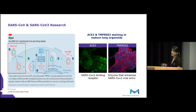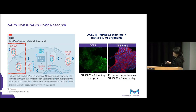I mentioned previously that these lung organoids might serve as a model for infectious disease. We asked whether the receptors and enzymes that enhance SARS-CoV-2 entry are expressed in our lung system. We took highly mature lung organoids and stained them for ACE2 — the SARS-CoV-2 binding receptor — and also for TMPRSS2, an enzyme that enhances SARS-CoV-2 viral entry. Our lung organoids do highly express both of these proteins important for viral entry, suggesting they have implications as a model system for studying infectious disease.